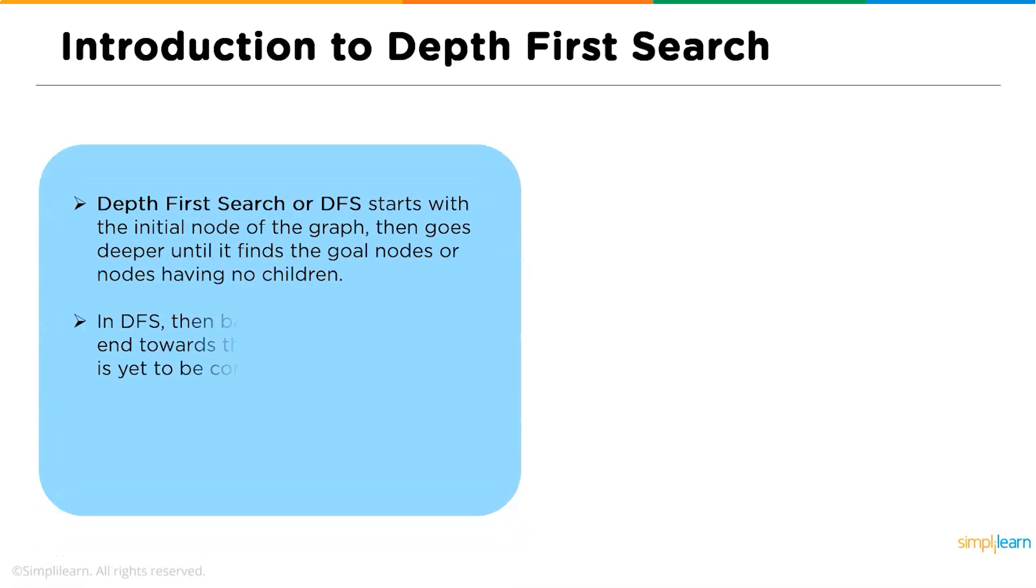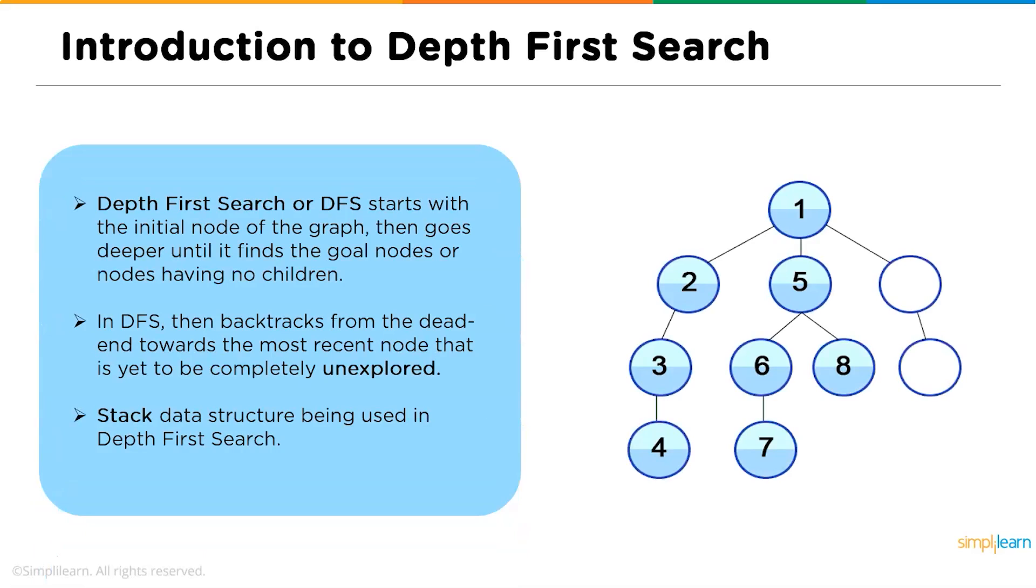So what is a depth first search? Basically, a depth first search is an algorithm for traversing or searching tree or graph data structures. The algorithm starts at the root node, selecting some arbitrary node as the root node in case of a graph, and explores as far as possible along each branch before backtracking.